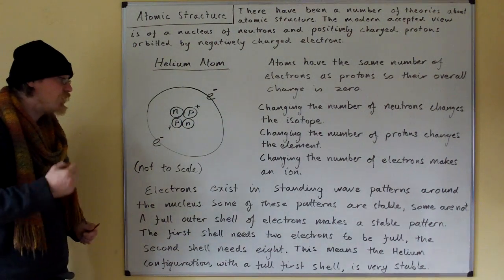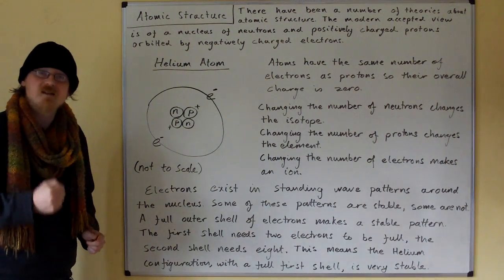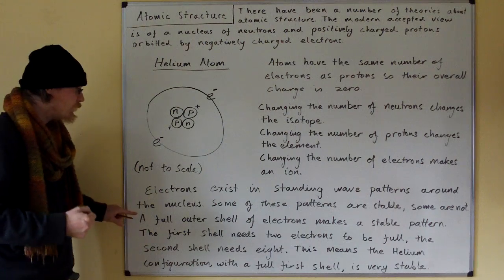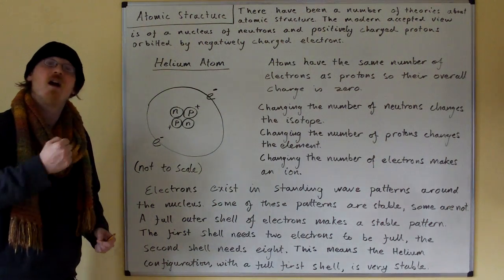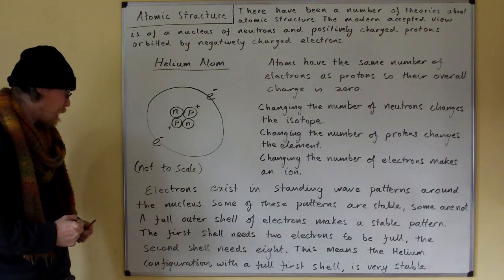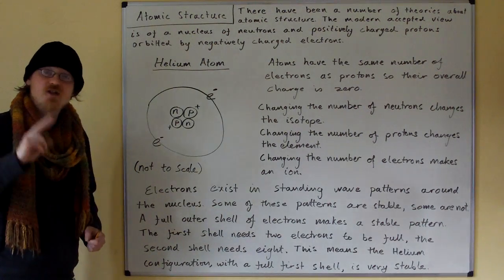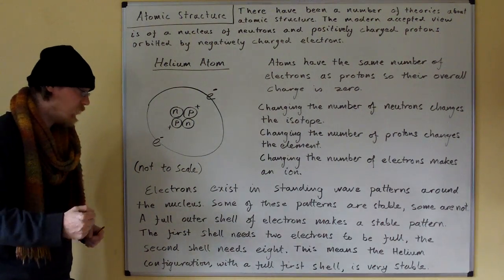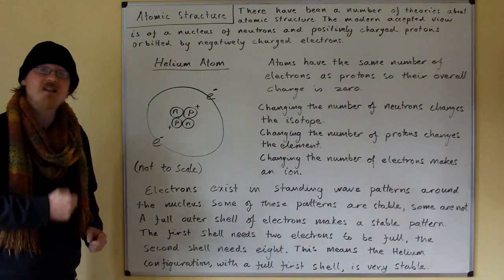A full outer shell of electrons makes a stable standing wave pattern. The first shell needs two electrons to be full. The second shell needs eight.